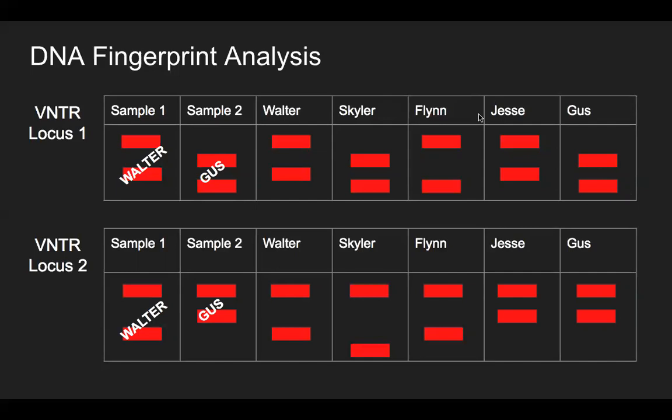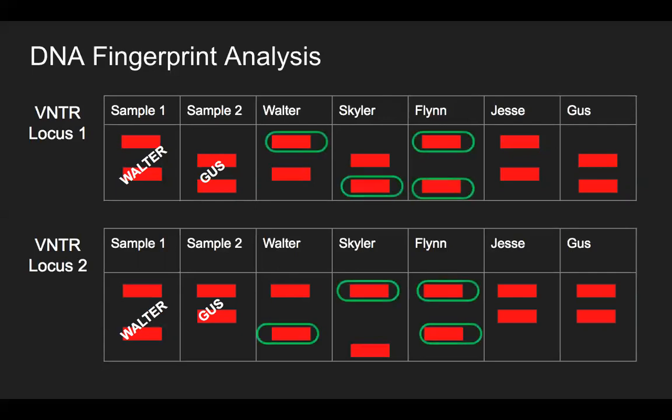Aside from the investigation, we can conclude that Flynn White was, in fact, the son of Skyler and Walter White, as further analysis is done on the DNA fingerprints. Flynn received one allele from his mother and one allele from his father at both loci, allowing the forensics team to conclude that Walter and Skyler were the biological parents of Flynn.